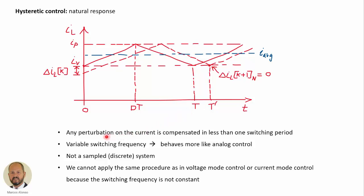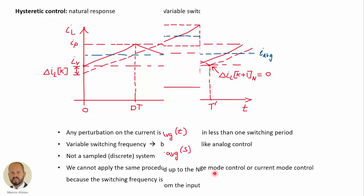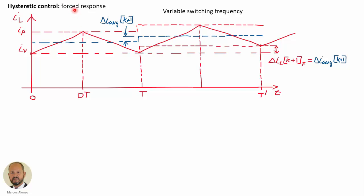The conclusions are: any perturbation on the current is compensated in less than one switching period; we have variable switching frequency, so this behaves more like analog control; we cannot consider this a discrete system because the switching period is variable and the characteristic of a sampled system is lost. Therefore we cannot apply the same procedure as in voltage mode control or current mode control, where the switching frequency was constant.